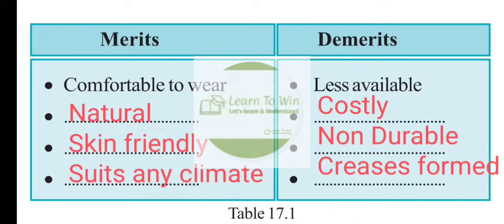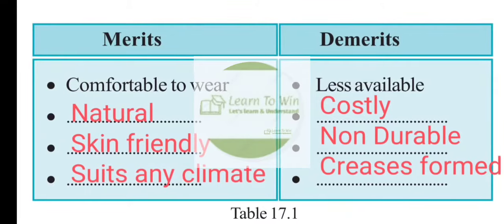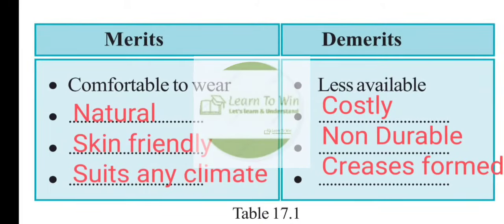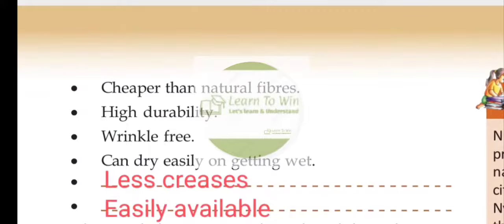Demerits of natural fibers: they are less available. Cotton is not easily available. They are costly and non-durable. The materials crease easily. Creases are formed, making them less easy to maintain.